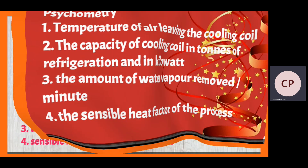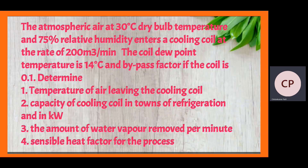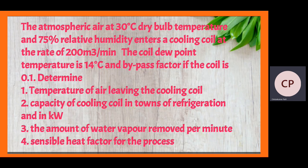First I will read the given problem. Atmospheric air at 30°C dry bulb temperature and 75% relative humidity enters a cooling coil at the rate of 200 m³ per minute. The coil dew point temperature is 14°C and bypass factor of the coil is 0.1. Determine: temperature of air leaving the cooling coil, capacity of the cooling coil in tons of refrigeration and in kilowatt, the amount of water vapor removed per minute, and the sensible heat factor for the process.